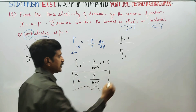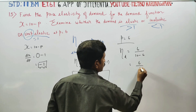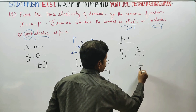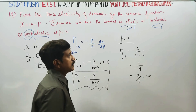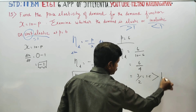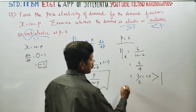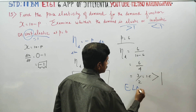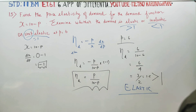Substituting p equal to 6: 6 by 10 minus 6 equals 6 by 4, which simplifies to 3 by 2, that is 1.5. Since 1.5 is greater than 1, the elasticity of demand is Elastic.